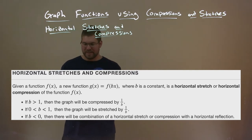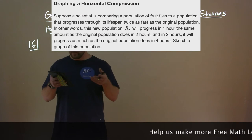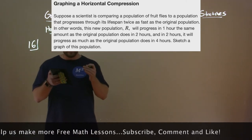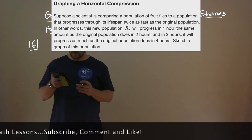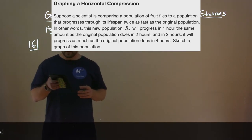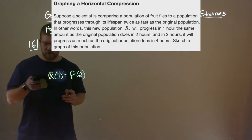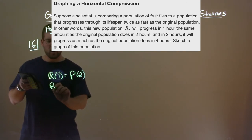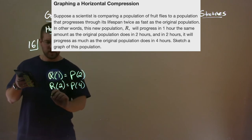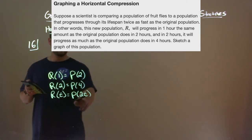Suppose a scientist is comparing a population of fruit flies to a population that progresses through its lifespan twice as fast as the original population. This new population r will progress in 1 hour the same amount as the original population does in 2 hours, and in 2 hours it will progress as much as the original does in 4 hours. So r of 1 equals p of 2, and r of 2 equals p of 4. In general, r of t is equal to p of 2t — the input is multiplied by 2 on the inside.